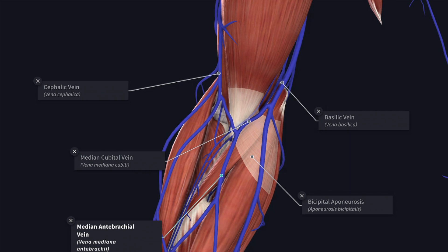The median antebrachial vein ascends on the front of the forearm and joins the median cubital vein or basilic vein, or bifurcates to join both the cephalic and basilic veins. The median cubital vein is usually selected for withdrawal of blood, intravenous injection, blood transfusion and cardiac catheterization. Internal arteriovenous fistulae are sometimes established for hemodialysis in chronic renal failure between the cephalic vein and the radial artery above the wrist, to permit repeated venipuncture access to the bloodstream.